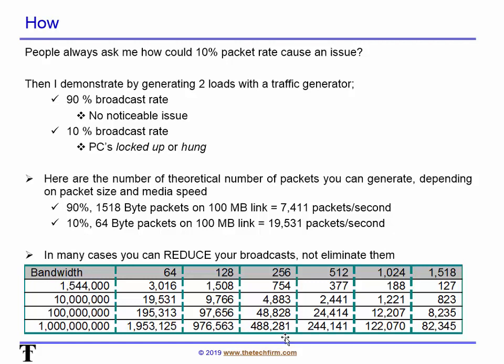This table is simple math. Bandwidth is in bits, frame sizes are in bytes, 8 bits in a byte — and there you go. You can easily replicate this chart in Excel or a calculator and get an idea of how many packets per second are flying around your network. This also explains why first-generation gig devices couldn't really achieve the bandwidth they were promised — because of this simple math when you talk about performance in general.